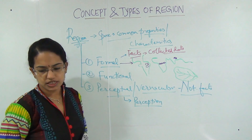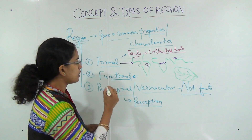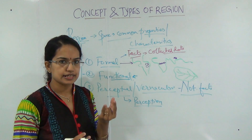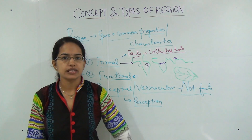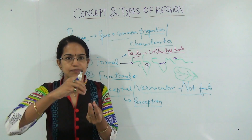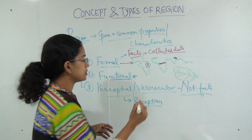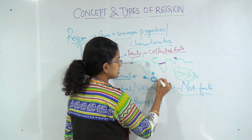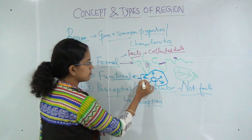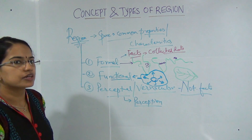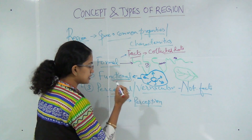Now let's look at what is a functional region. A functional region is much beyond what we have already discussed. Functional region basically is a region that originates at a center and slowly and gradually tries to spread out. For example, New York is a major center in the United States. What is happening is all the services and activities are slowly spreading out from New York to its suburbs. The nearby areas are influenced by that region, and therefore we call this a functional region.